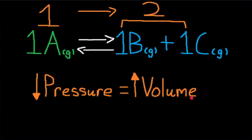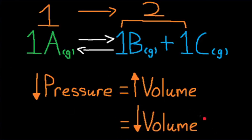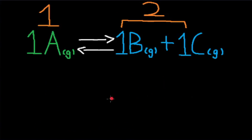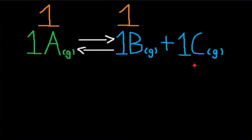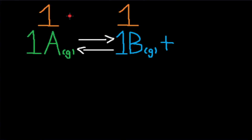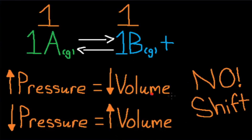So if volume increases, pressure decreases. And if volume decreases, pressure increases. If pressure increased or volume decreased, the reaction would shift left to reduce the extra pressure, as the reactant side has less gas moles than the product side. When pressure increases, point at the smaller number. If C somehow disappeared from this reaction, the gas moles on the reactant side and the product side would both equal 1, meaning if we change pressure or volume, there would be no shift, because the gas moles are equal on both sides.